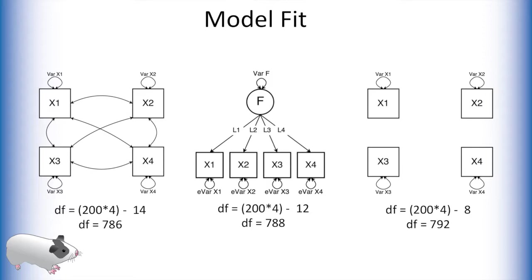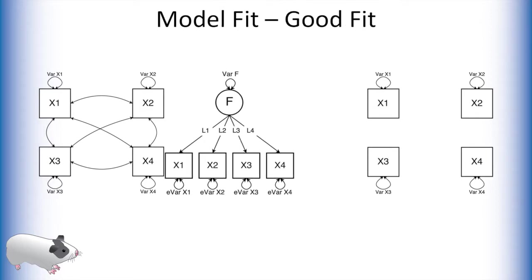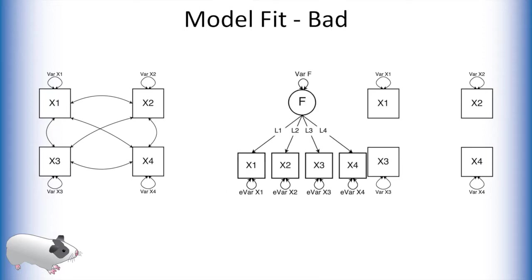On top of degrees of freedom differences, these models also differ in their mathematical likelihoods. Theoretically, the saturated model should have the best possible likelihood, and the independence model should have the worst. We use these as anchoring points for determining how well our model fits the data. The closer the likelihood of our factor model is to our saturated model, the better the fit. Conversely, the closer the likelihood of our factor model is to the independence model, the worse the fit. Different fit indices attack this problem in different ways.